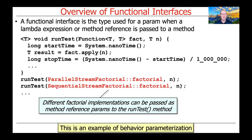Here are two examples of how to use the runTest method. You can see we call runTest with ParallelStreamFactorial::factorial, which is a method reference, as well as SequentialStreamFactorial::factorial, which is the sequential version. These different methods can be passed as parameters to the runTest method. This is a classic example of behavior parameterization.